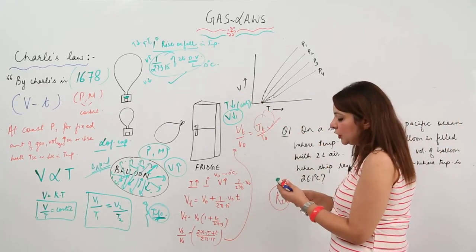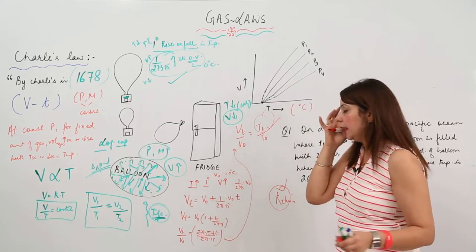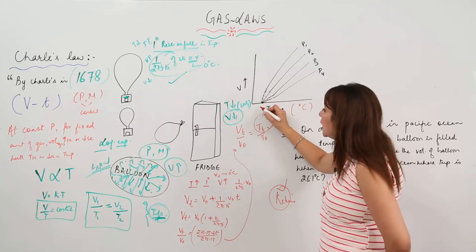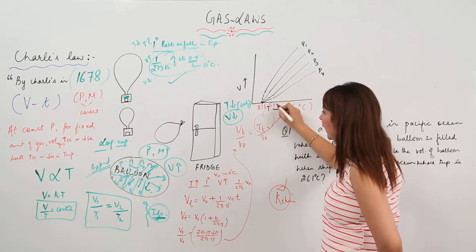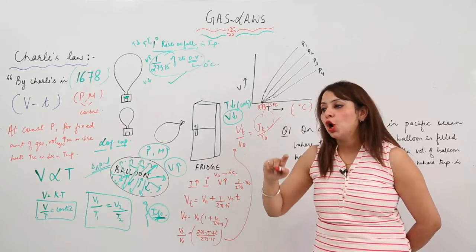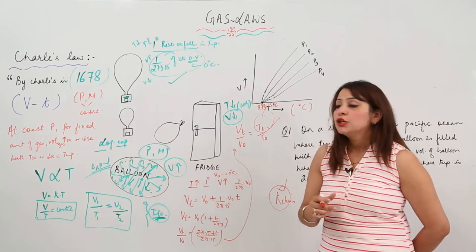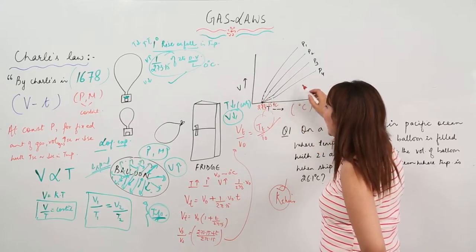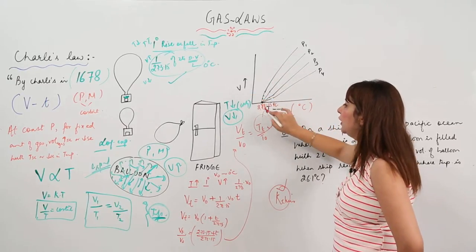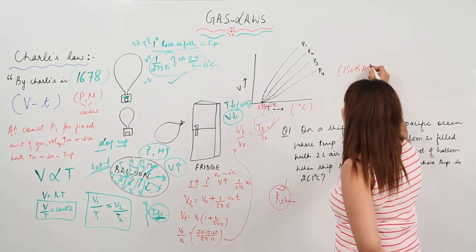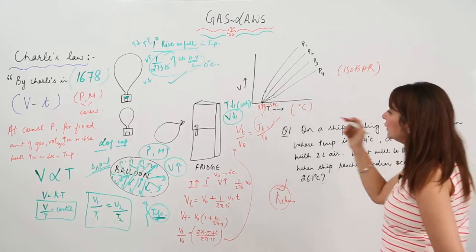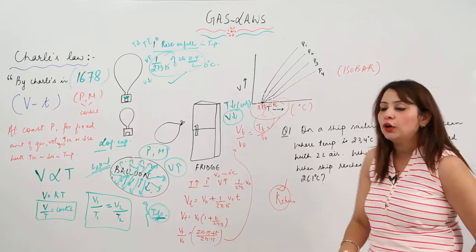Now let's explain this graphically. Plotting a graph between volume and temperature (in °C), we see that all lines originate not from zero but from −273.15°C, because that is the temperature at which all gases tend to occupy zero volume. The graph shows straight lines at different pressures, and each line plotted between V versus T at constant pressure is called an isobar.